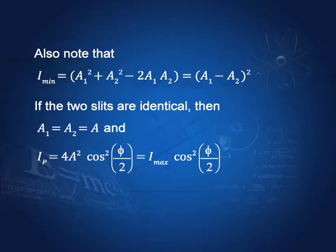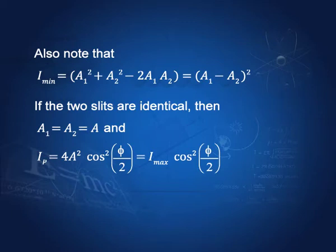If the two slits are identical so that A1 = A2 = A, then Ip = 4A²·cos²(φ/2). Here 4A² is the maximum intensity, so this becomes Imax·cos²(φ/2). Therefore, the intensity distribution on the screen is Ip = Imax·cos²(φ/2), which can be plotted as a function of position.